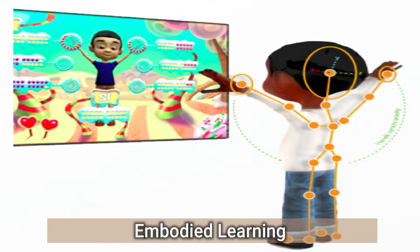Embodied Learning: In this approach, the mind and body of students work together to explore science. The physical feedback as well as the resultant actions reinforce their learning process. This idea is well supported by today's technology, such as visual systems that track movement or wearable sensors to collect physical and biological data.